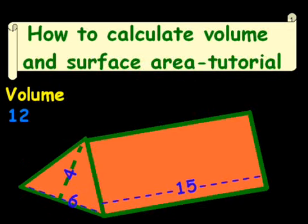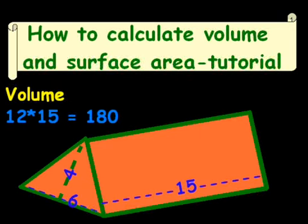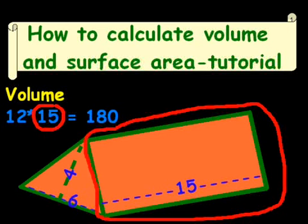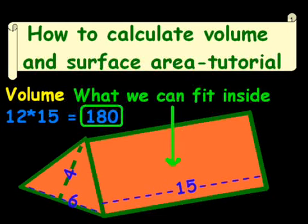And that is our area of the triangle right there. Now, we know that the length is 15. So we take the 12 and multiply that times 15, and that gives us a total of 180.